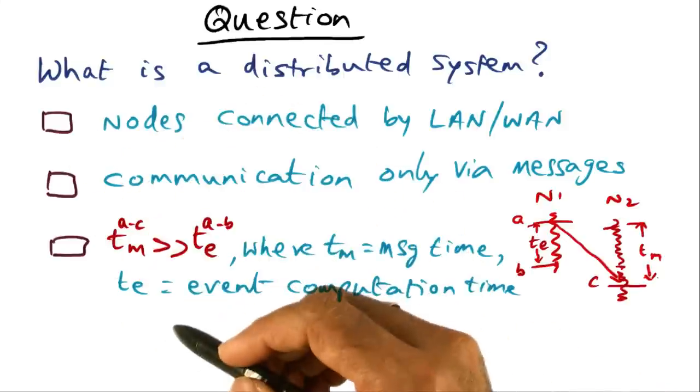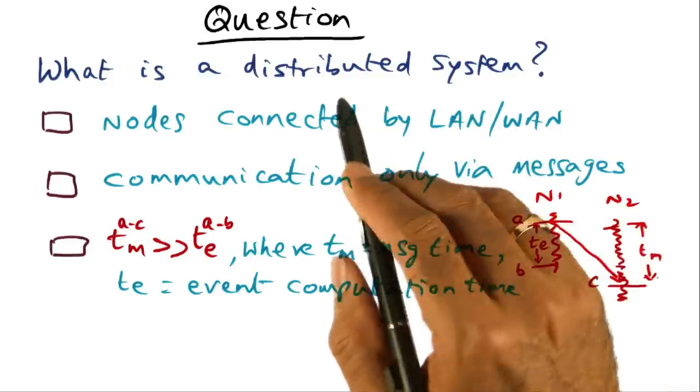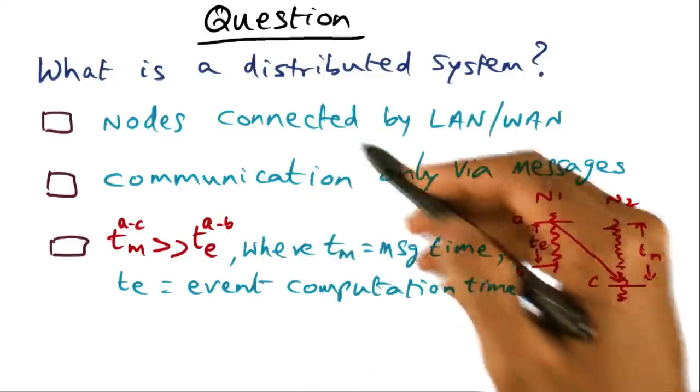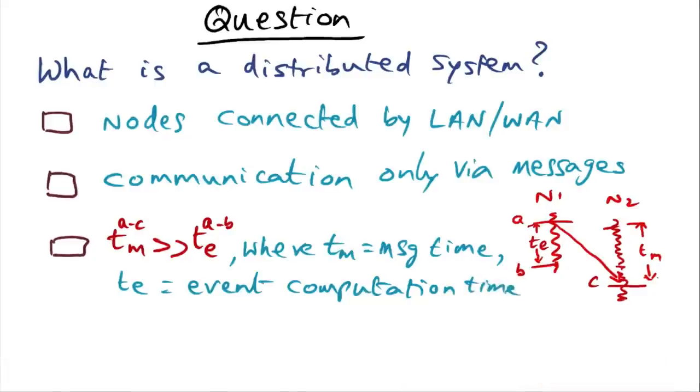So you have three choices, and I want you to think about what your definition, what your mental model of a distributed system is, and how any of these choices fit or do not fit your mental model of what you think a distributed system is.